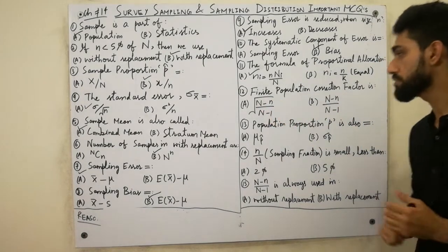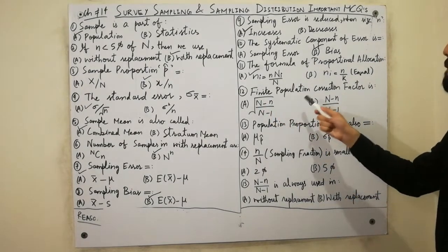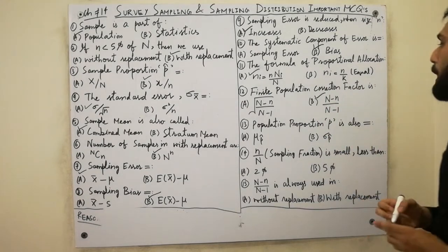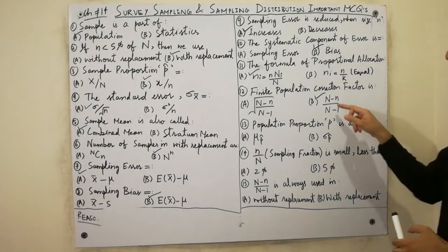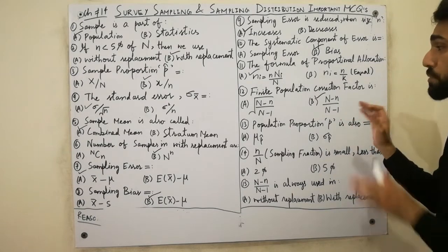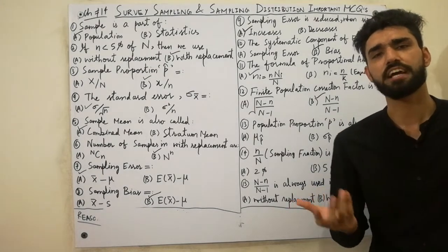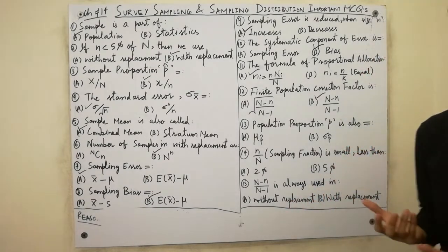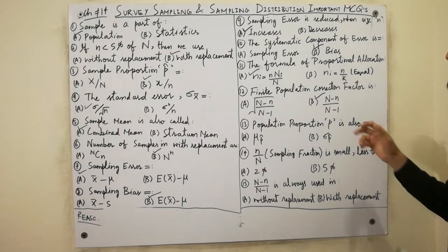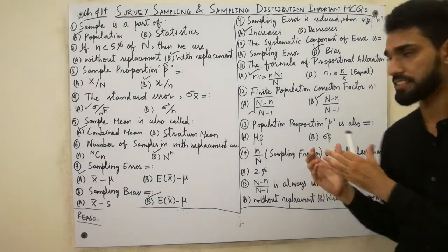MCQ 12: the finite population correction factor is always (capital N minus small n) divided by capital N. Must remember: the finite population correction factor equals (N minus n) over N.